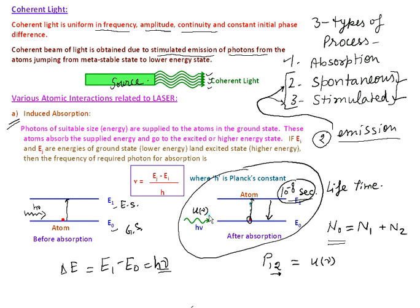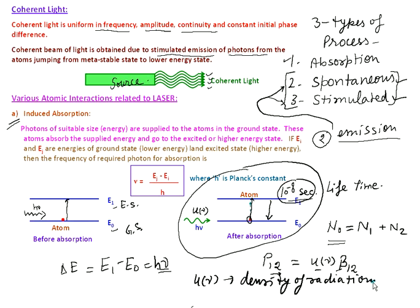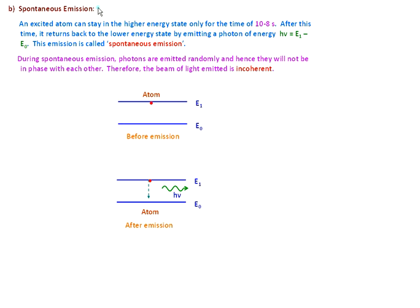One factor is the density of radiation, defined by U-nu — a function of frequency nu. If you increase the density, obviously a large number of atoms will absorb energy and go into the excited state. The second factor comes through the Einstein coefficient B12. So the transition probability P12 equals U-nu times B12, where U-nu is the density of radiation and B12 is the Einstein coefficient, which provides information about the material in terms of the lifetime and decay width of the energy level.